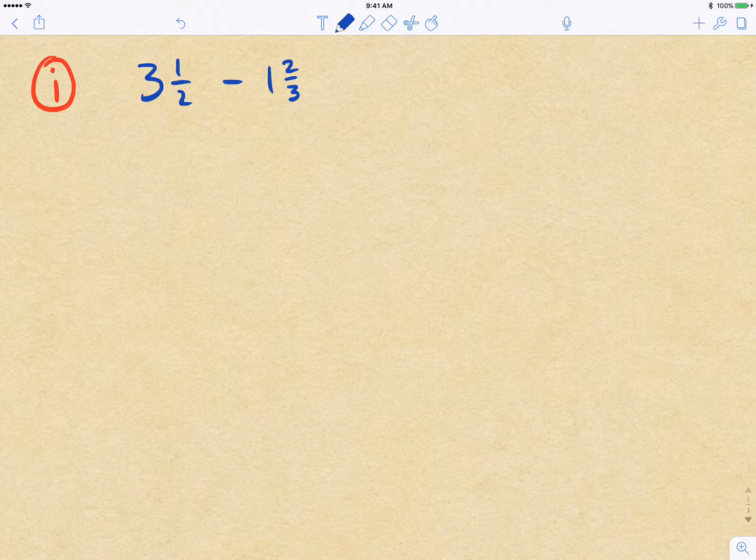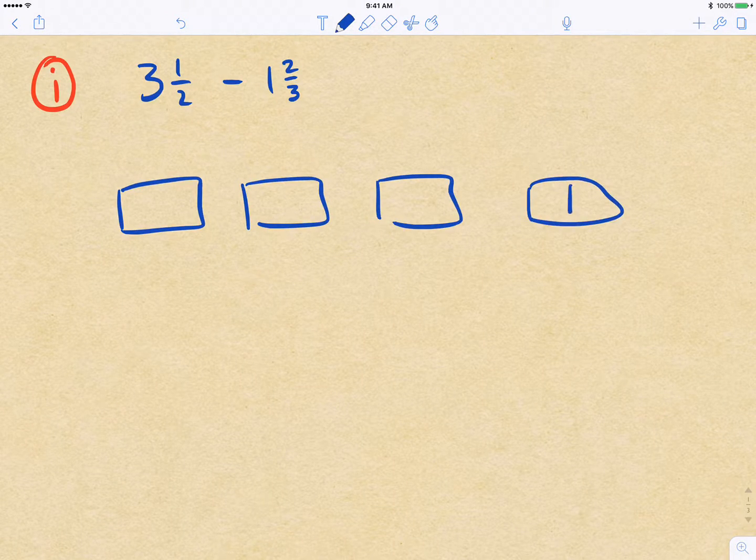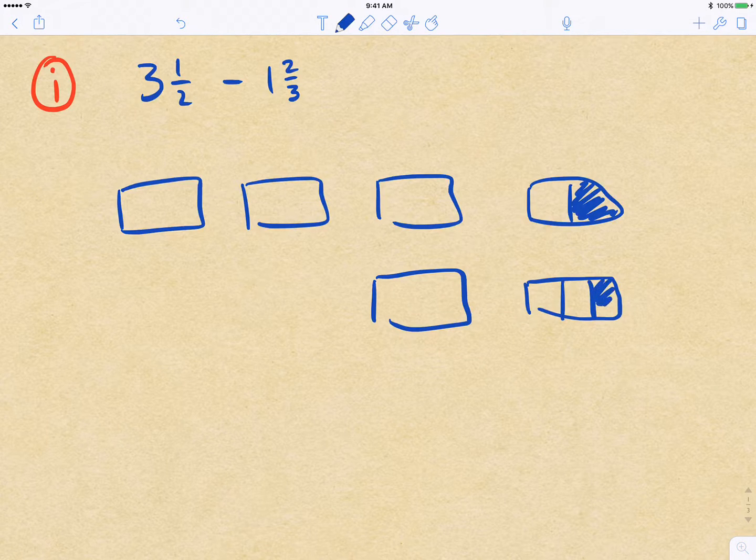So let's focus on this first one. We have 3½ minus 1⅔. Visually, we can think of what this means. We've got three wholes and we've got ½, and then we're subtracting 1⅔ here.